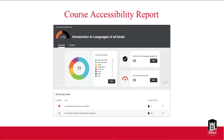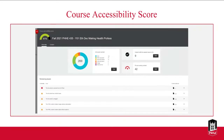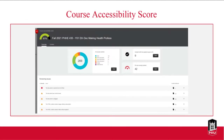One thing that does not get scored is video content at this time, so you'll need to check video content yourself. For example, if you're linking to a YouTube video or embedding a video, does it have captioning? The Disability Resource Center can help create caption files. Also, if you upload video files through Kaltura, Kaltura will auto-caption them and you can edit those captions within Kaltura, then embed the video in your course.